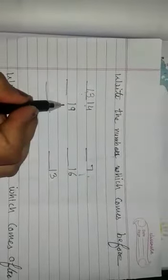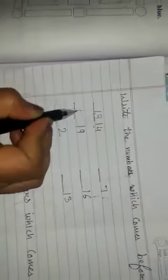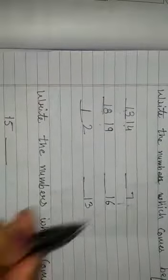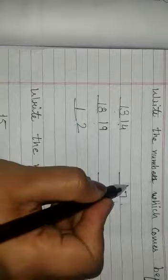What comes before 19? One, eight, 18. What comes before 2? 1. What comes before 7? 6.